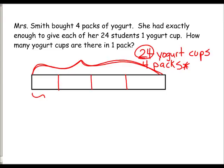The question mark is: how many cups are there in one pack? So if students can do the math on the side and they know their math facts, they would write out the math problem, which is 24 cut into four equal groups, or divided by four, is equal to six.